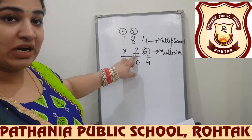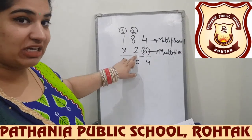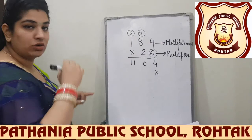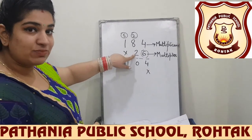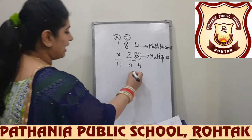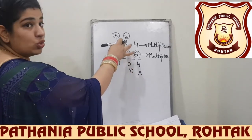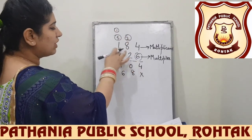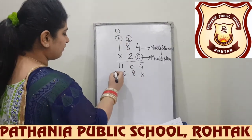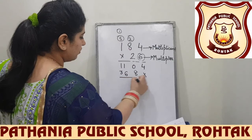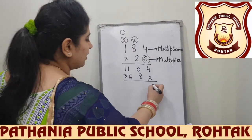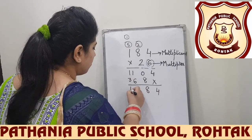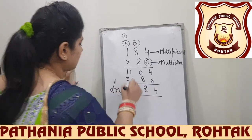Before multiplying the second digit of the multiplier with the multiplicand, put a cross here. Now multiply 2 × 4 = 8. Then 2 × 8 = 16, so write 6 and carry 1. Now 2 × 1 = 2, plus 1 carry = 3. Now add all the results: you get 4, 8, 7, 4 — so 4784 is your answer.